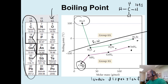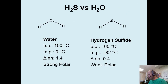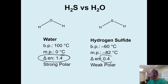This contrasts hydrogen disulfide versus water and the difference in their physical properties. Water has a much larger boiling point and melting point. The sulfur-hydrogen bond is really non-polar, which explains the drastic difference — the hydrogen bond in water is so strong.